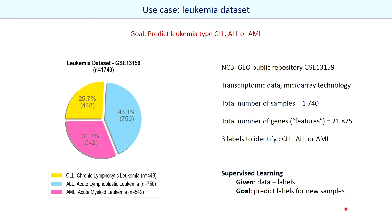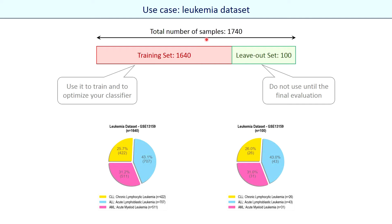The goal is to predict leukemia type. This type of classification problem is called supervised learning, when we have data and labels for each sample. We will randomly split our total dataset of 1,740 samples into two datasets: 1,640 samples for training and optimization of our machine learning algorithm, and 100 samples left out for the final evaluation. We can imagine that these 100 samples represent new patients with leukemia for which we should identify their leukemia types.